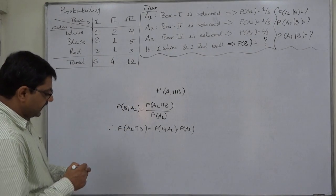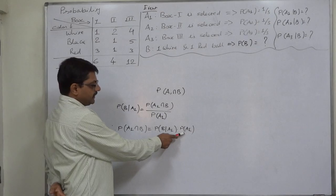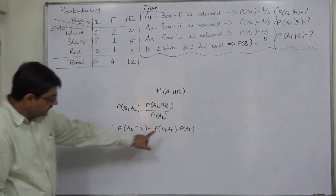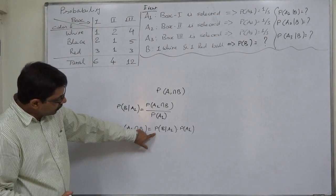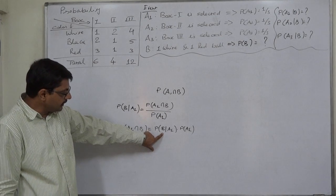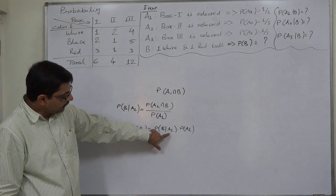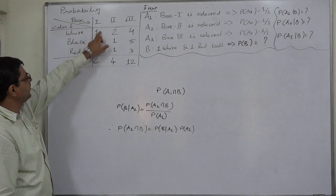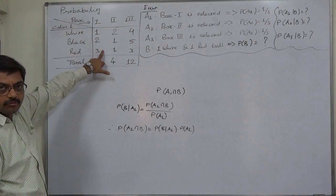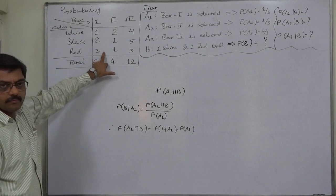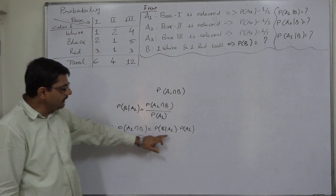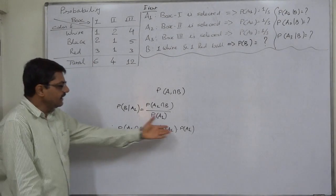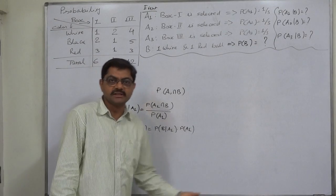Out of these probabilities, we know P(A1). Now, which can be calculated first? P(B|A1) can be calculated first — the probability of one white and one red ball given the first box is selected. If the first box is selected, we know the number of white and red balls, so we can calculate this directly from the information. And we have P(A1) = 1/3, since 1 box is selected out of 3.